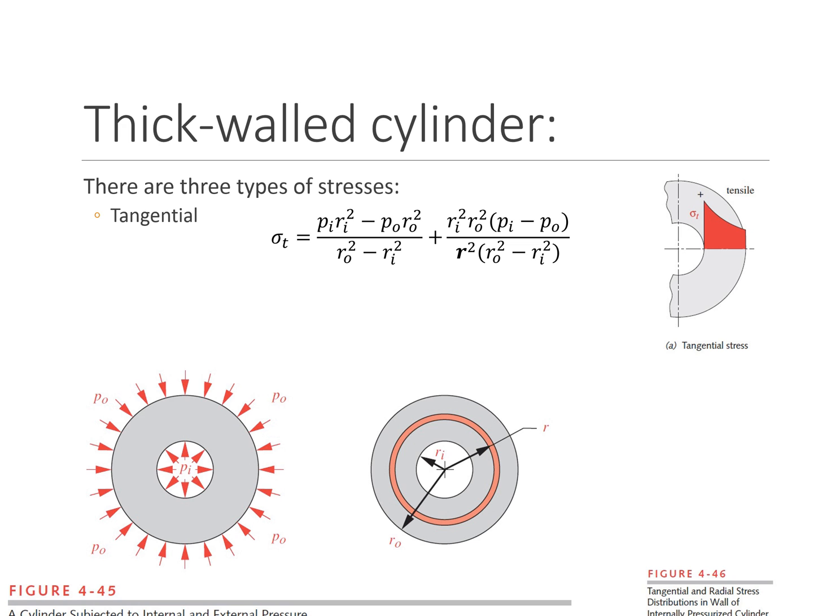If we have the special case where there is no outside pressure, then the equation simplifies quite a bit. Now we have 1 plus r_o squared over r squared — it's just the reduction of the original equation.